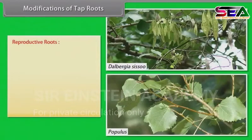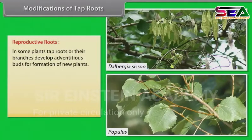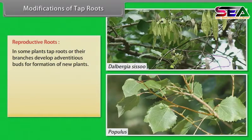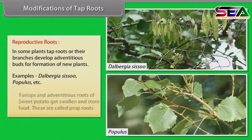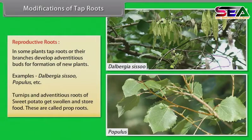Reproductive roots. In some plants, tap roots or their branches develop adventitious buds for formation of new plants. Examples: Dalbergia sissoo, Populus, etc. Turnips and adventitious roots of sweet potato get swollen and store food. These are called prop roots.